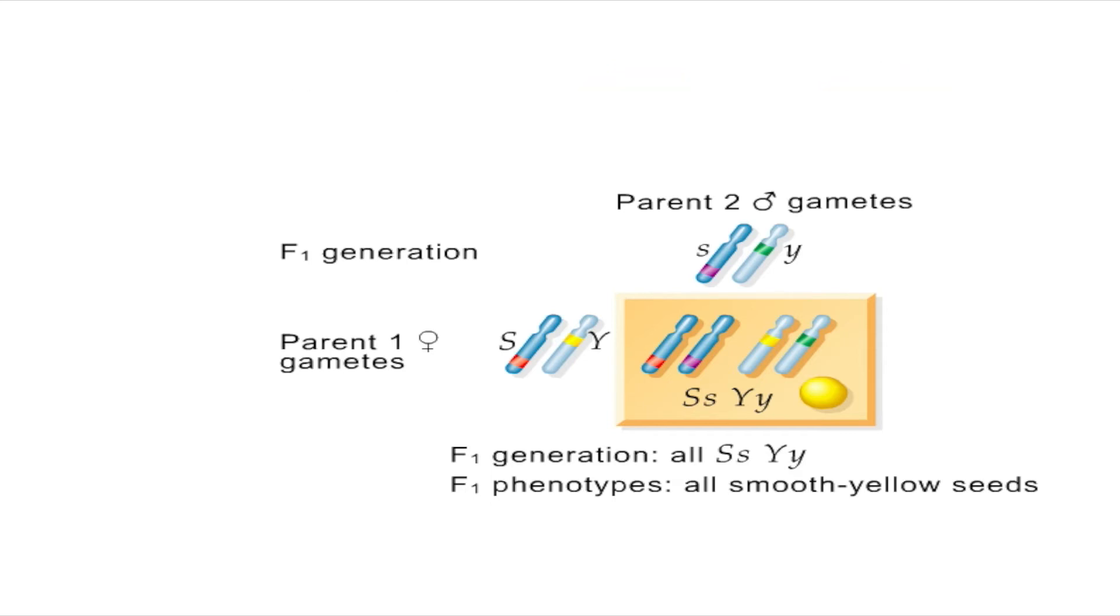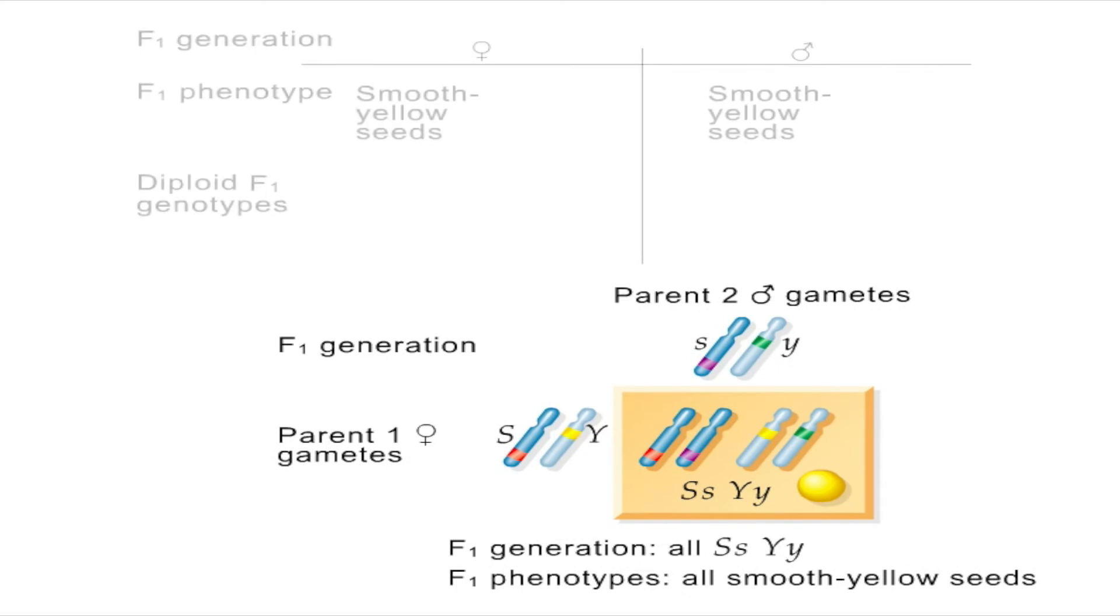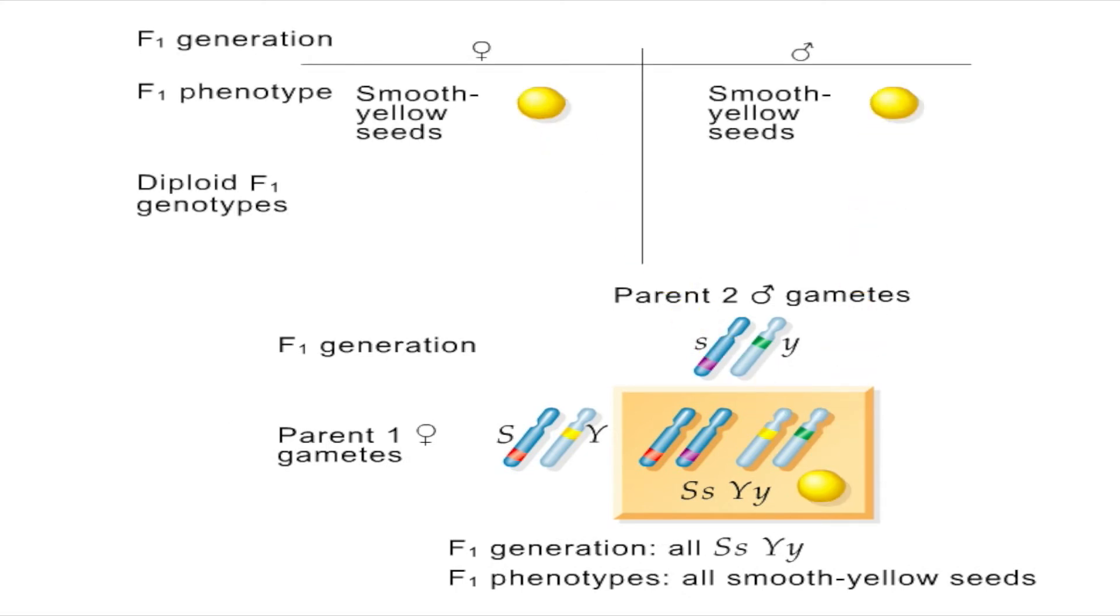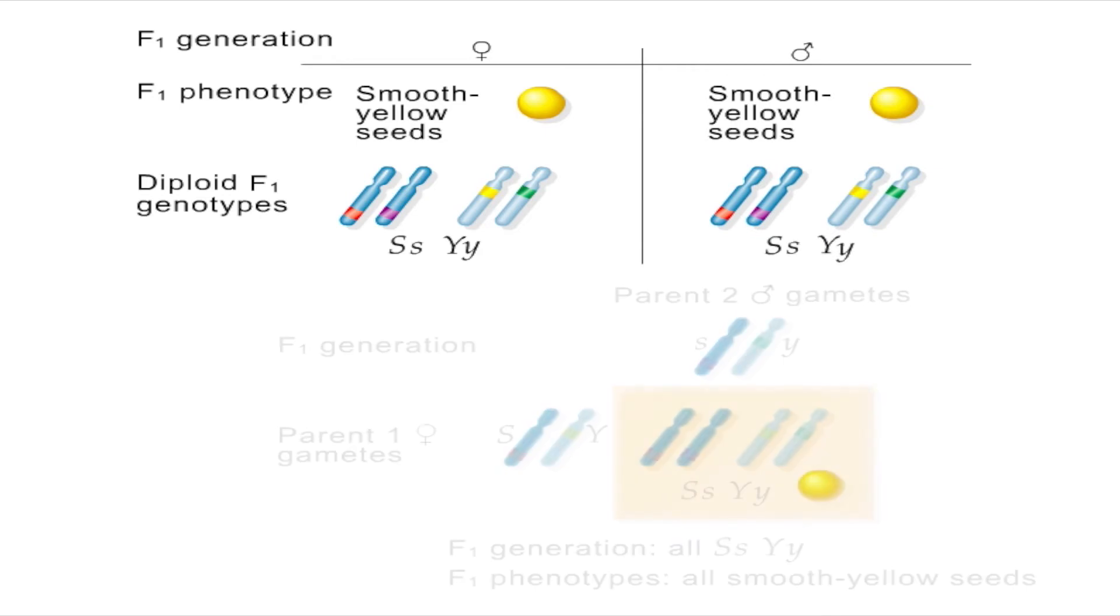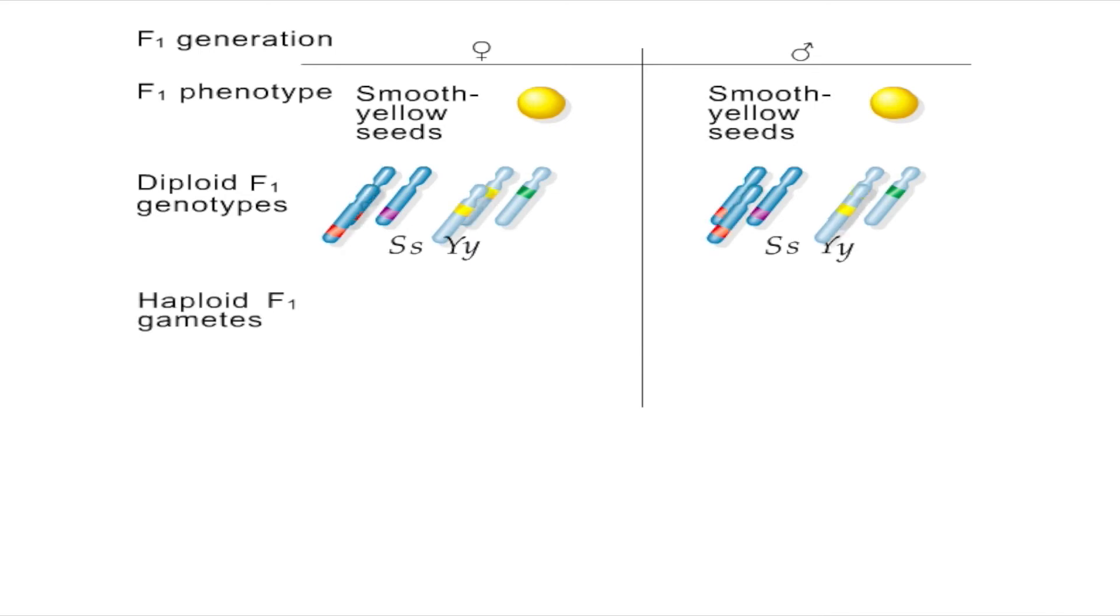Let's consider the gametes the doubly heterozygous F1 plant can produce. Two alleles for the seed texture trait, S and s, and two alleles for the seed color trait, Y and y. Thus, four different combinations of these two genes can be made.